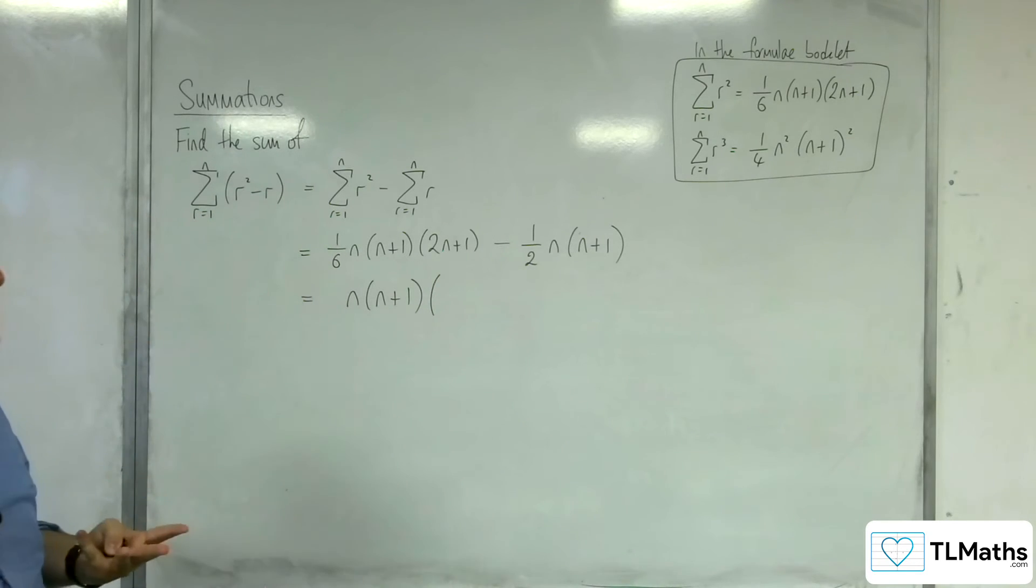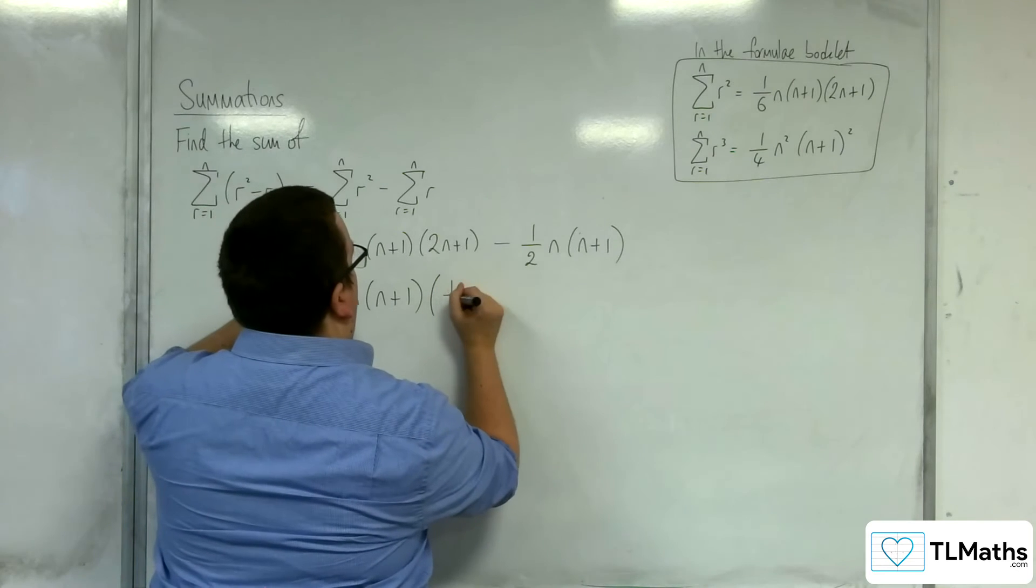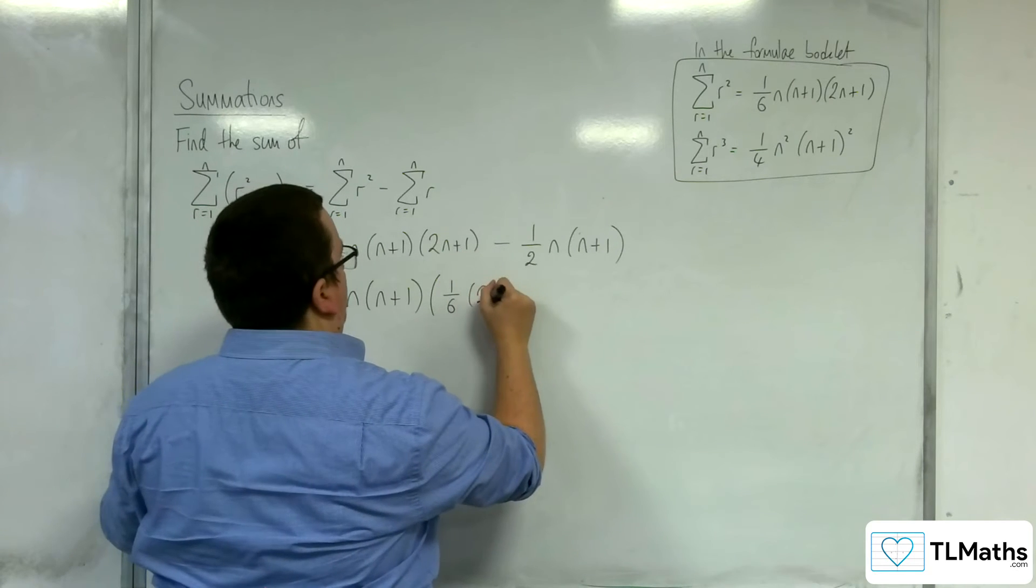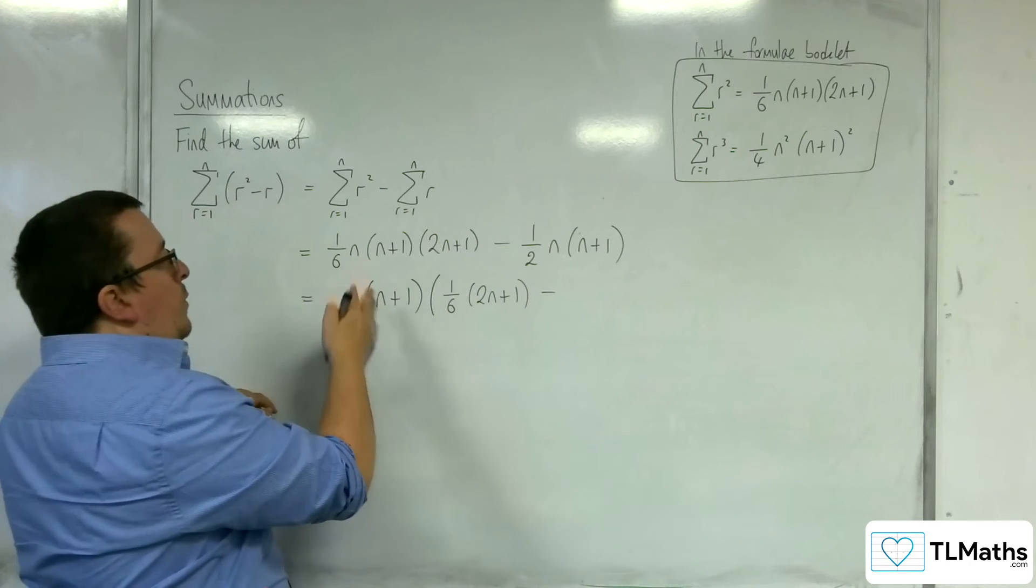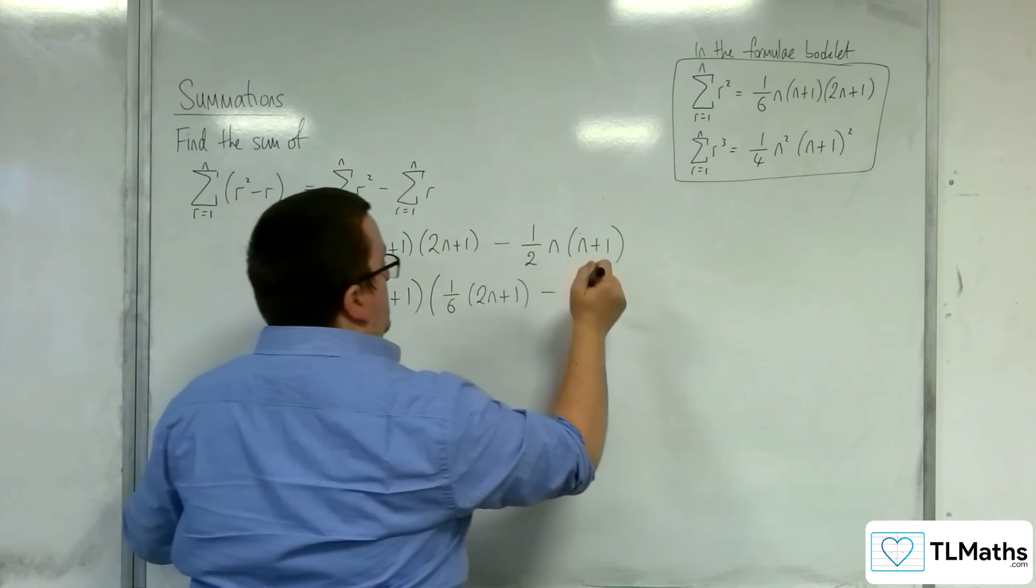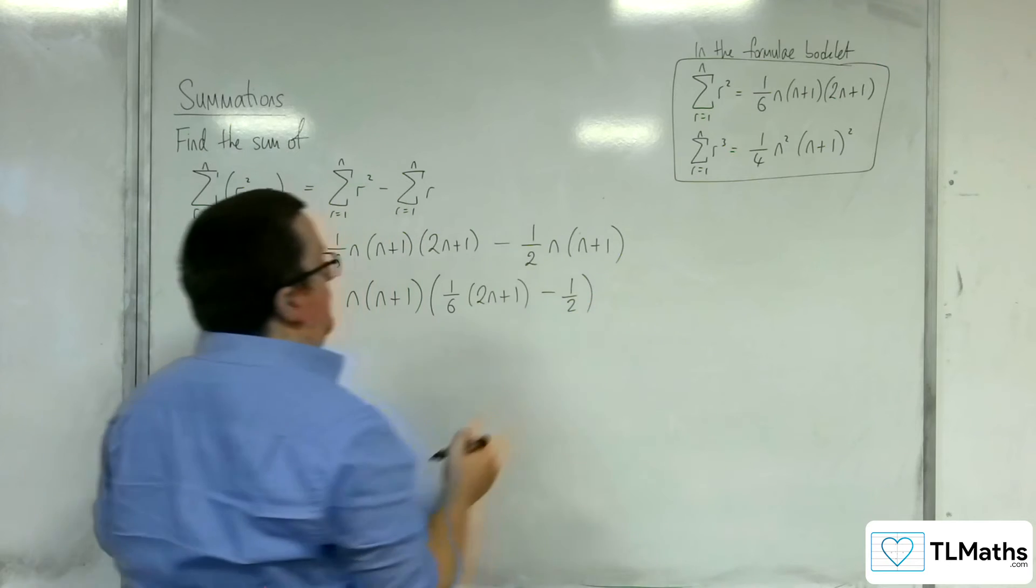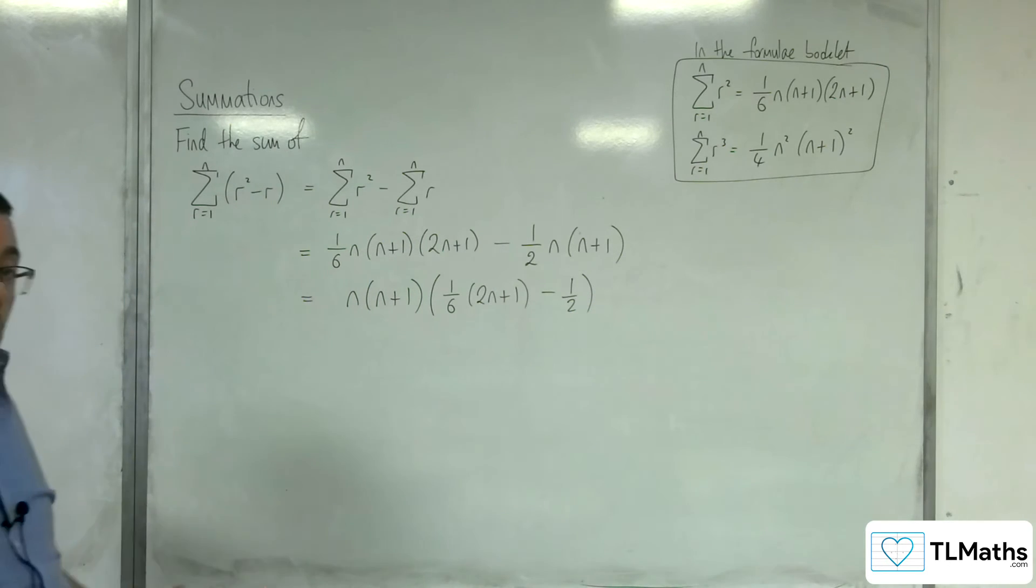We're going to factor both those two terms out. So we've got the 1 sixth left, and the 2n plus 1. Then take away, well, n times n plus 1 just times minus 1 half will do it. So this is what we've got.